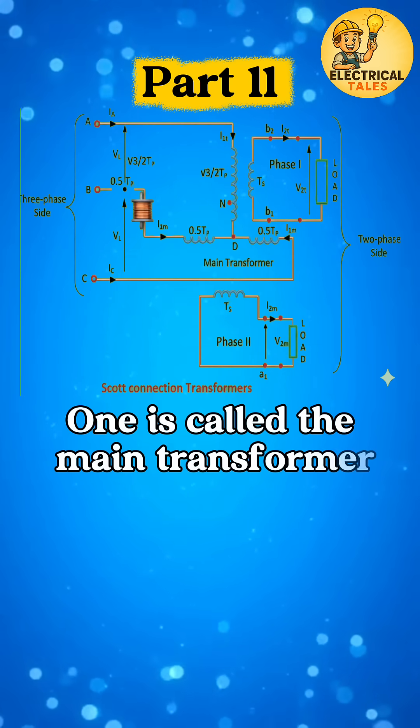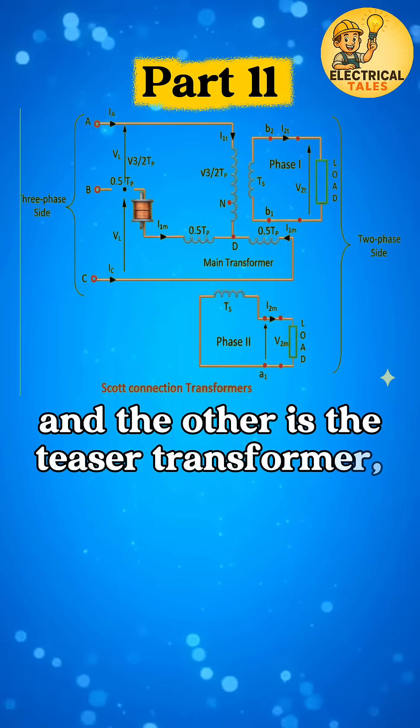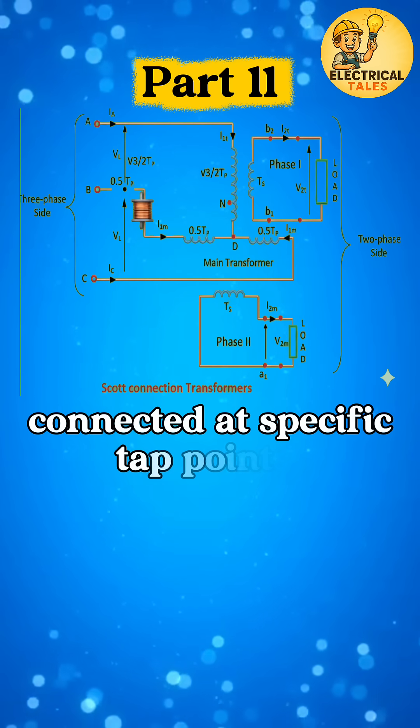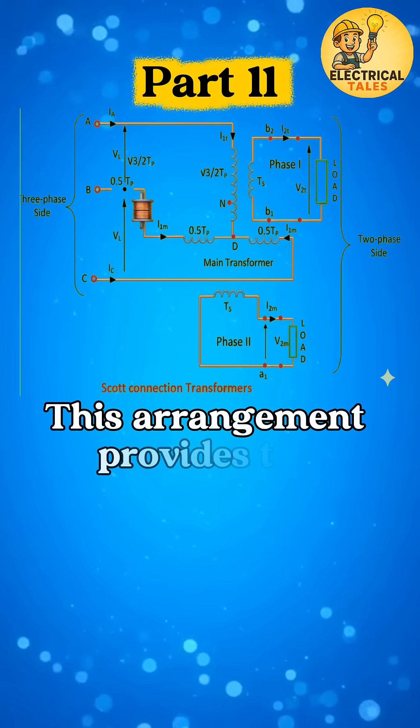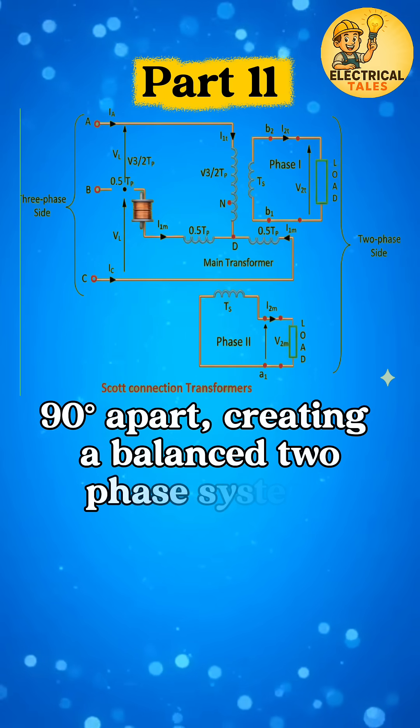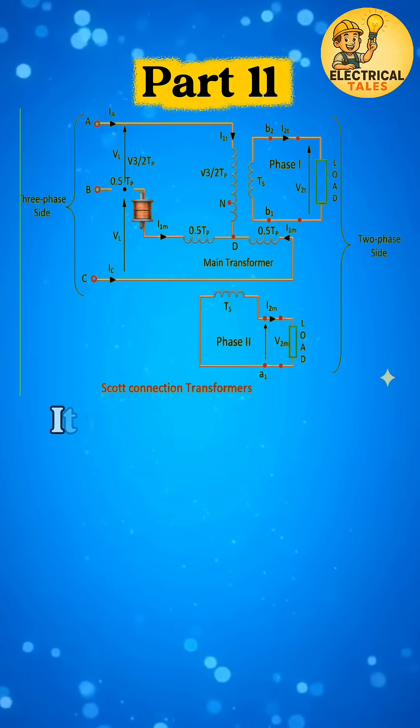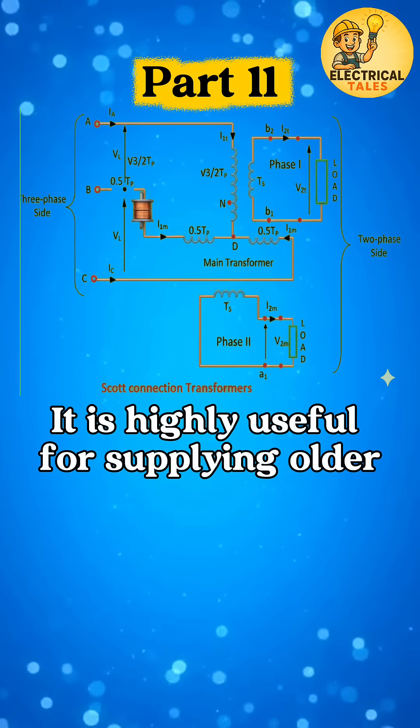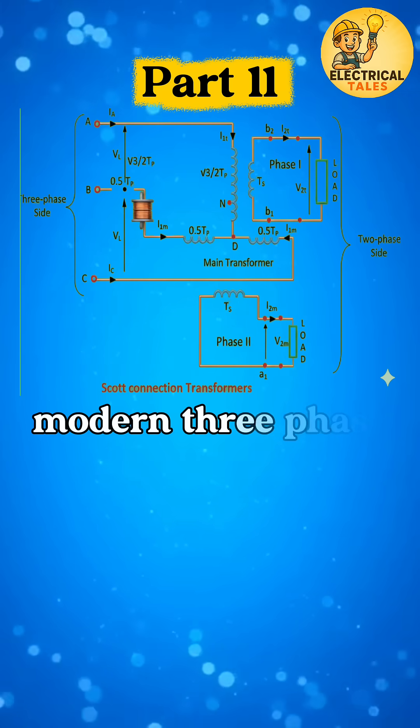One is called the main transformer and the other is the teaser transformer, connected at specific tap points. This arrangement provides two equal voltages 90 degrees apart, creating a balanced two-phase system. It is highly useful for supplying older two-phase equipment from modern three-phase networks.